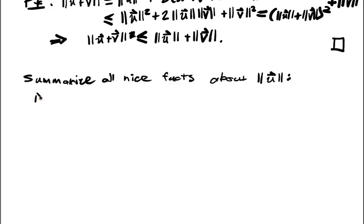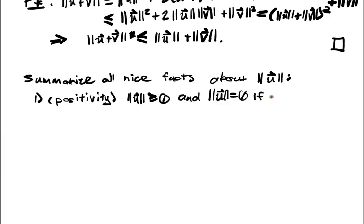So the first fact is often called positivity. And it says that the length is greater than or equal to 0, and if the length of u equals 0, this happens if and only if u itself is equal to 0.